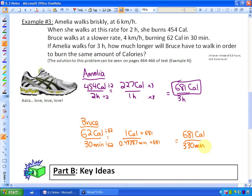So we kind of have the answer. Let's just read the question and see how we can interpret it. It says if Amelia walks for three hours, how much longer will Bruce have to walk in order to burn the same amount of calories? Now how much longer means longer than he's already walked. So if we read Bruce's context it says Bruce walks at a slower rate, four kilometers per hour, burning 62 calories in 30 minutes. So how much longer does he have to walk?